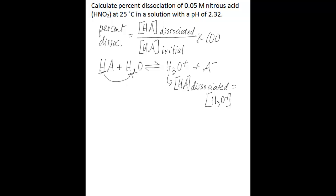The amount that dissociates equals the hydronium ion concentration in that solution. For our specific situation, this equation is nitrous acid plus water going to hydronium ion plus nitrite, the conjugate base of that acid.